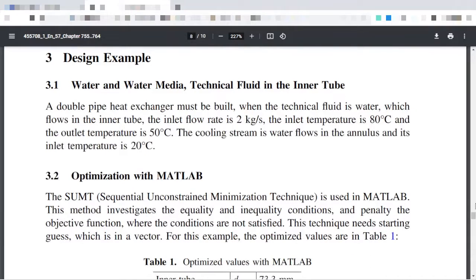What's important here in this paper is that I have an example. It's always very nice when we have papers with examples that show how things are calculated. Here I have a double pipe heat exchanger with an inner tube where the inlet flow is 2 kg/s of water and the inlet temperature is 80°C. The outlet temperature is 50°C.